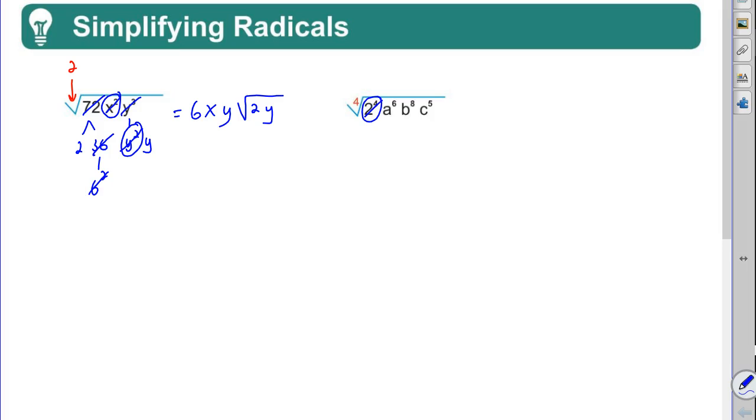It's a 2. So I'm going to do it underneath here - we get a 2 out. Alright, the a to the 6th. Again, with this a to the 6th, I'm gonna think of it as an a to the 4th times an a squared. What's the 4th root of a to the 4th? I get an a out.